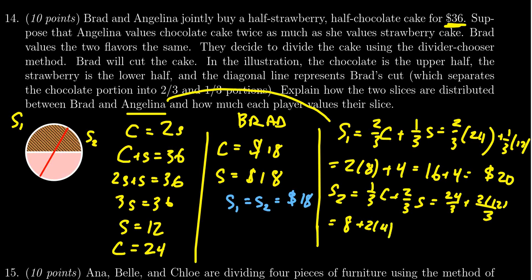For which, as we saw before, 3 goes into 24 eight times, 3 goes into 12 four times. You get 2 times 4 which is 8, 8 plus 8 is worth 16. But that's not too surprising given that the total cake was $36.